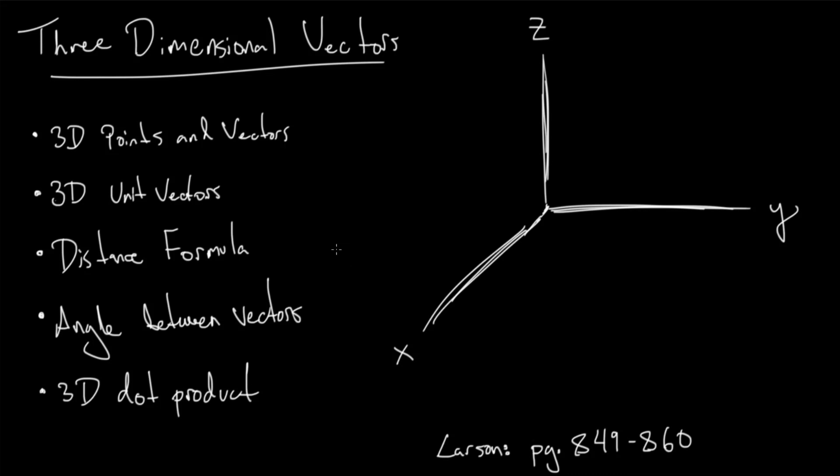With that, I'm going to close this video out. We covered perpendicular vectors with the dot product, the angle between vectors, and the dot product formula x1·x2 + y1·y2 + z1·z2 — basically in three dimensions, we're just adding a z to all the formulas we already knew. There's some basics in three-dimensional vectors. I hope it helped. See you next time.